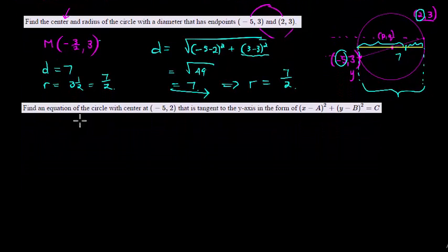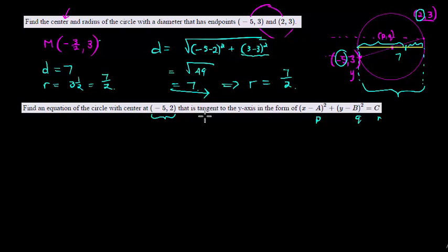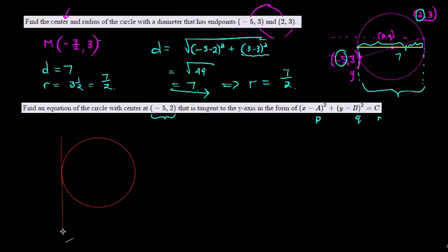The next question asks us to find the equation of a circle that has a given center and is tangent to the y-axis, in a specified format. Let me draw a circle that is tangent to the y-axis to give you a clue about what that means. Tangent means just touching — the y-axis is just touching our circle.